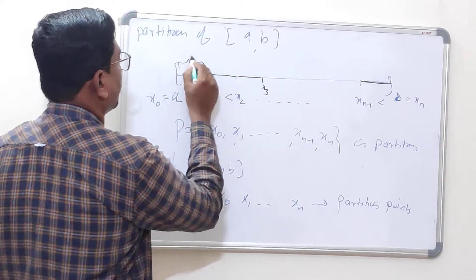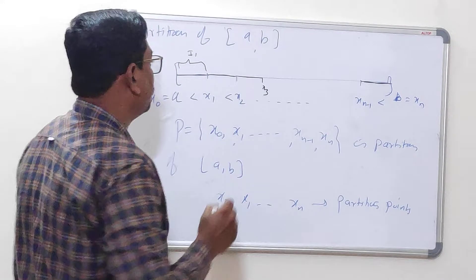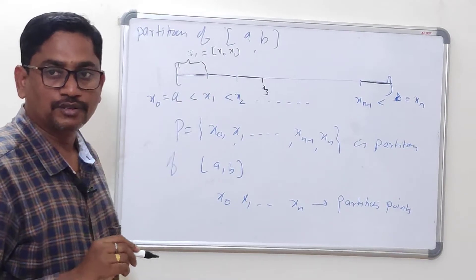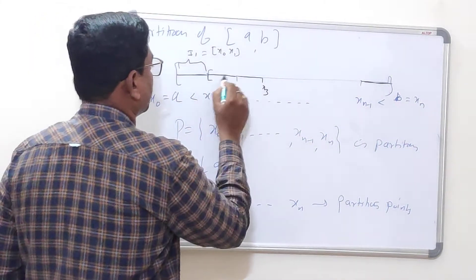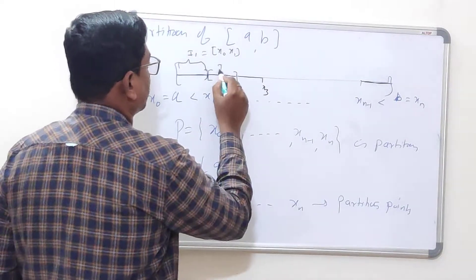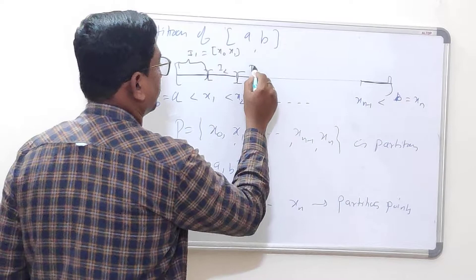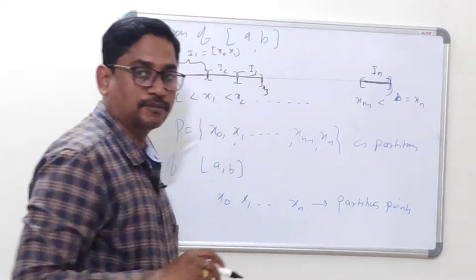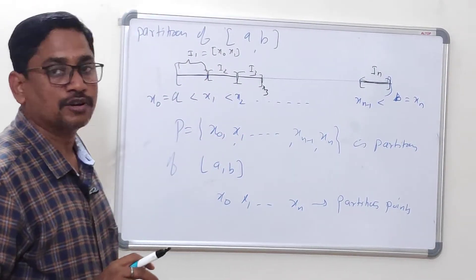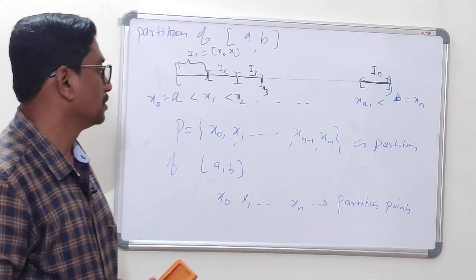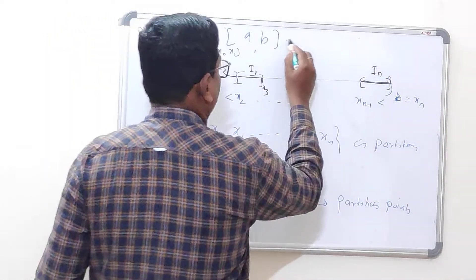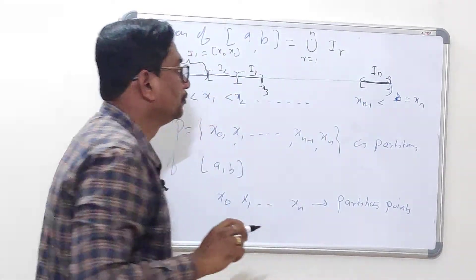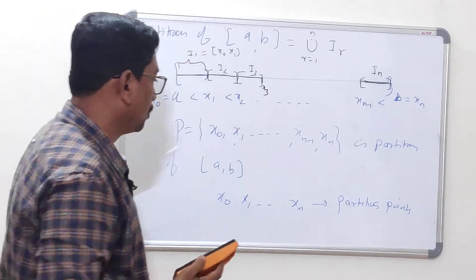We denote the subintervals as I₁, I₂, etc. The first subinterval I₁ represents the closed interval [x₀, x₁]. Similarly the second subinterval I₂ is [x₁, x₂]. Since there are n+1 points, we must have a total of n subintervals. The disjoint union of all these subintervals forms the closed interval [a, b], i.e., [a, b] is the union of I_r for r from 1 to n.